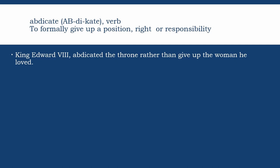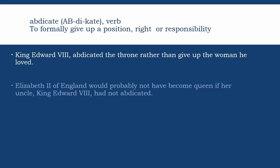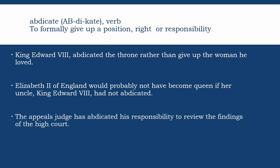King Edward VIII abdicated the throne rather than give up the woman he loved. Elizabeth II of England would probably not have become queen if her uncle, King Edward VIII, had not abdicated. The appeals judge has abdicated his responsibility to review the findings of the high court.